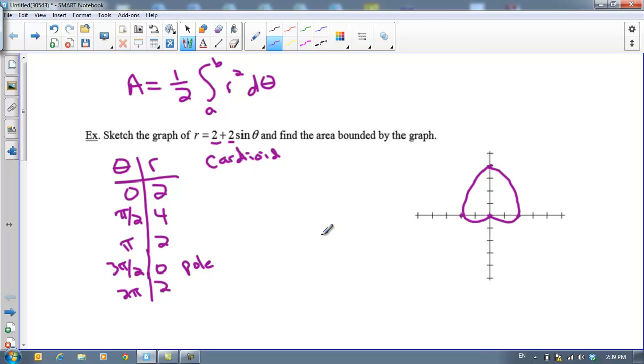Your cardioid is going to look something like this. And on top of that, as we graph this, we see that it takes from 0 all the way out to 2π for me to get back to where I started. So my area is going to equal 1/2 the integral from 0 to 2π of r squared. And your r is 2 + 2sin(θ) dθ.